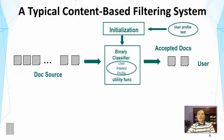In a content-based filtering system, there is a binary classifier with a user interest profile that tracks what the user wants. A utility function guides the system's decisions and helps set the threshold. Accepted documents are those that pass the threshold. An initialization module takes user input — specified keywords or chosen categories — to feed the system with an initial user profile.